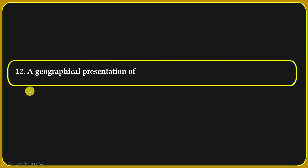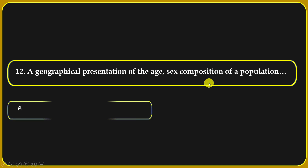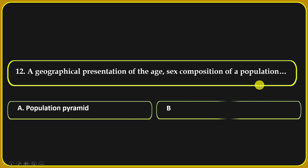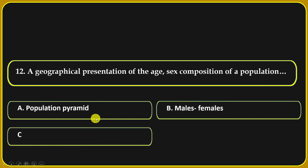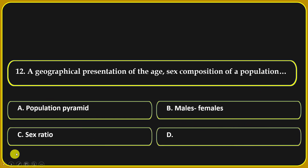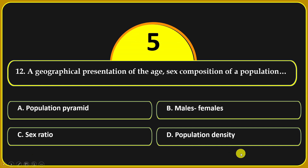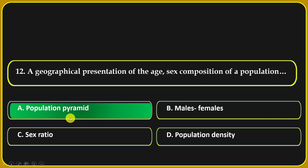A graphical presentation of the age and sex composition of a population: Population pyramid, male-females ratio, sex ratio, or population density. Population pyramid is the correct answer.